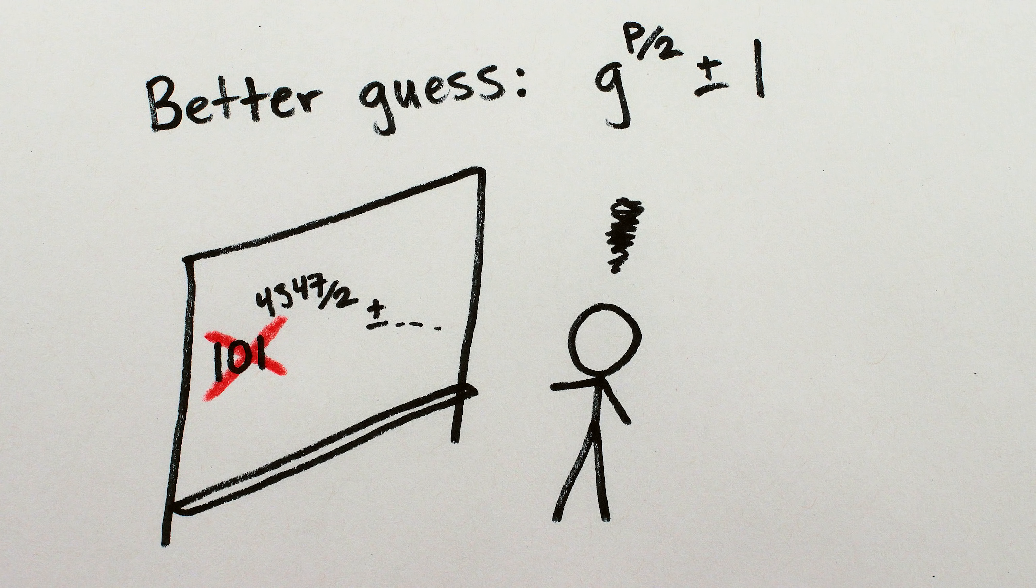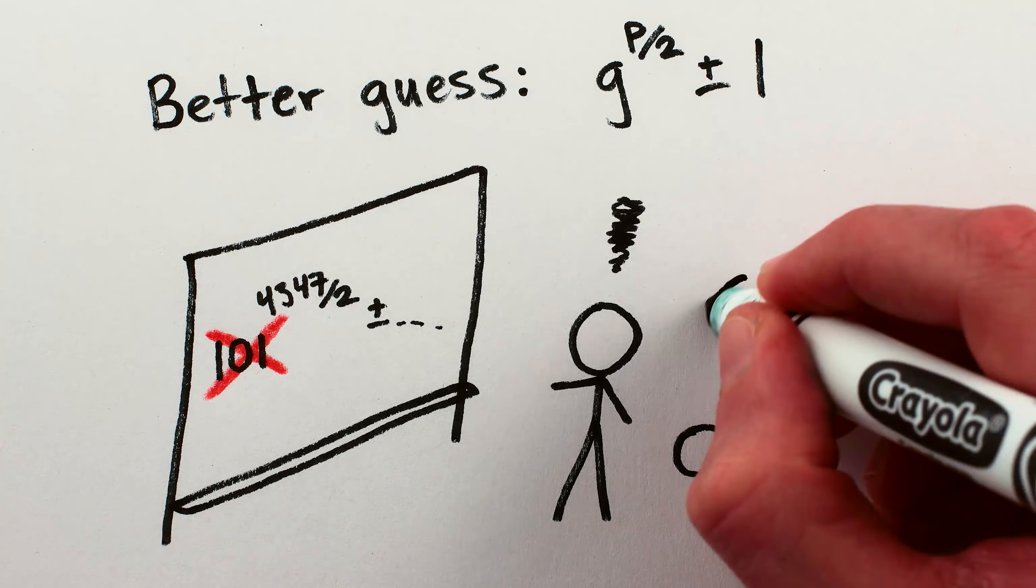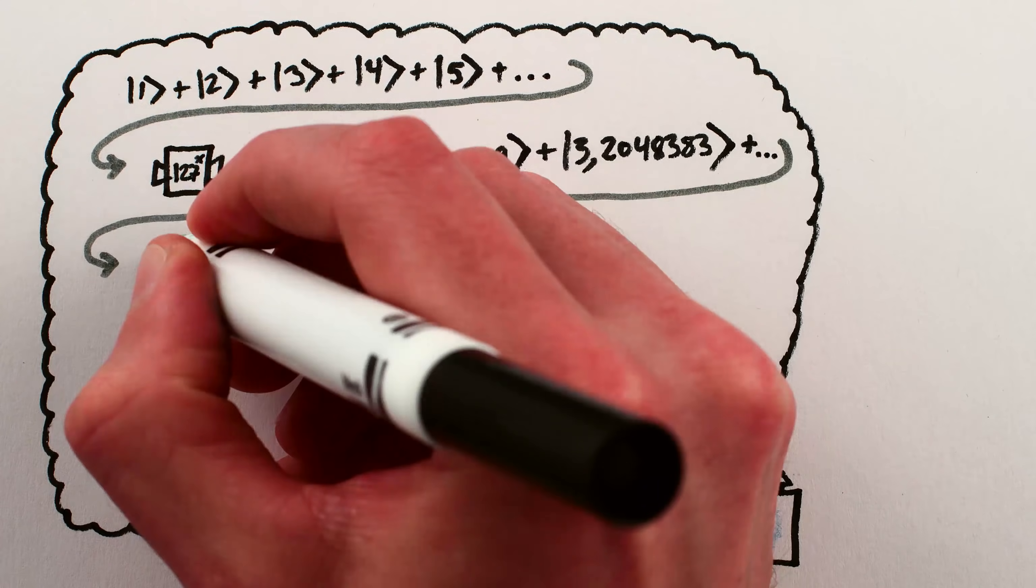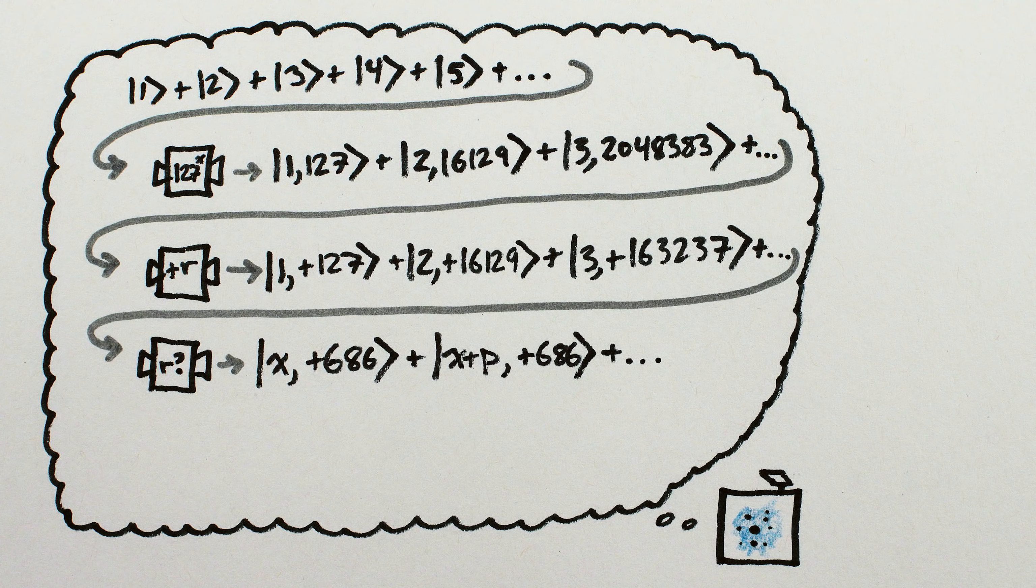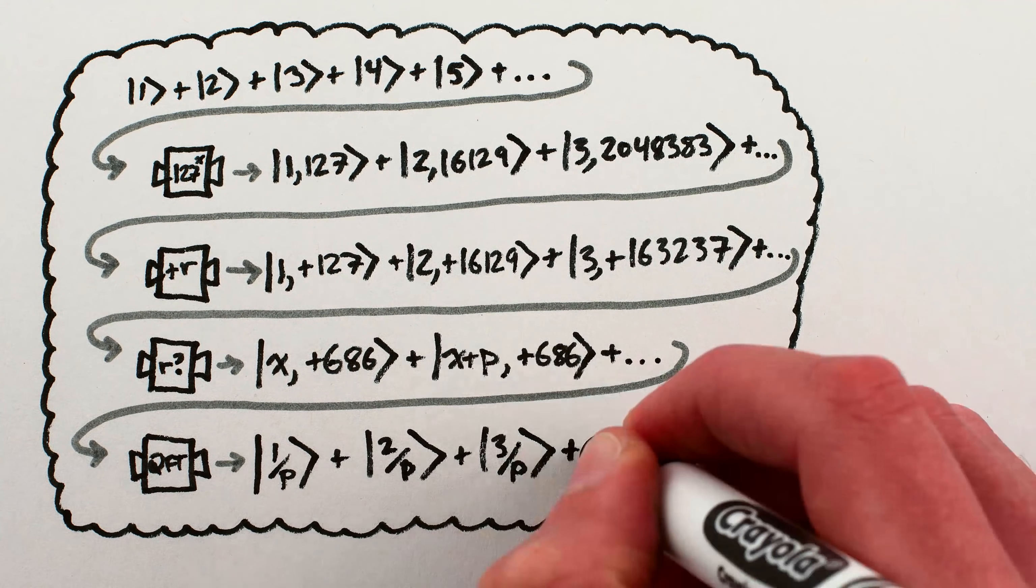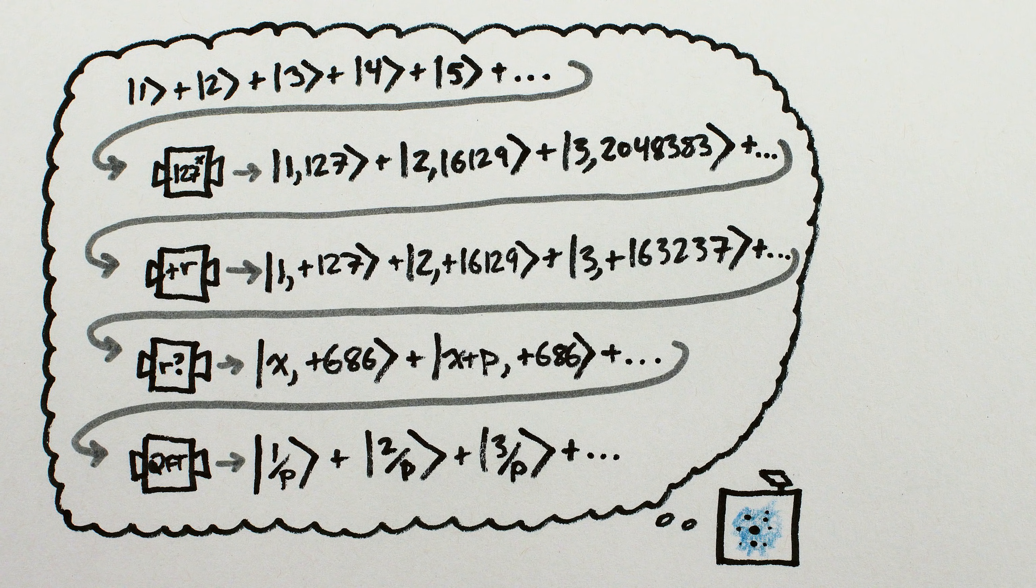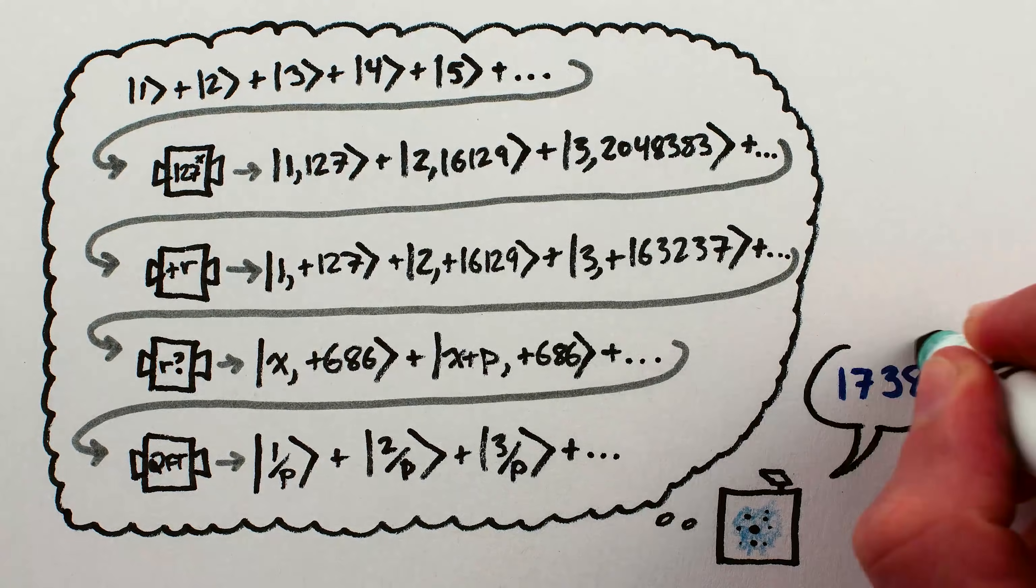Um, sorry. Well, let's pick another random guess, say 127. After going through the same process of creating simultaneous superpositions of raising 127 to all possible powers, and then doing a quantum Fourier transform, and so on, we'd end up finding that the value of p corresponding to 127 is 17,388.